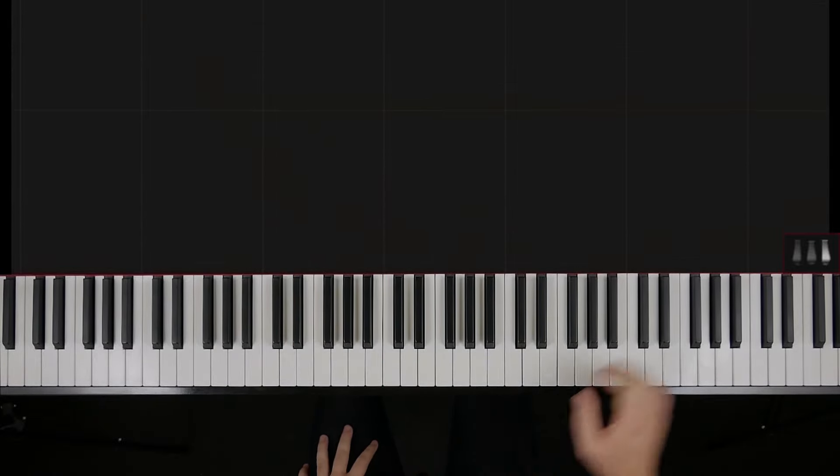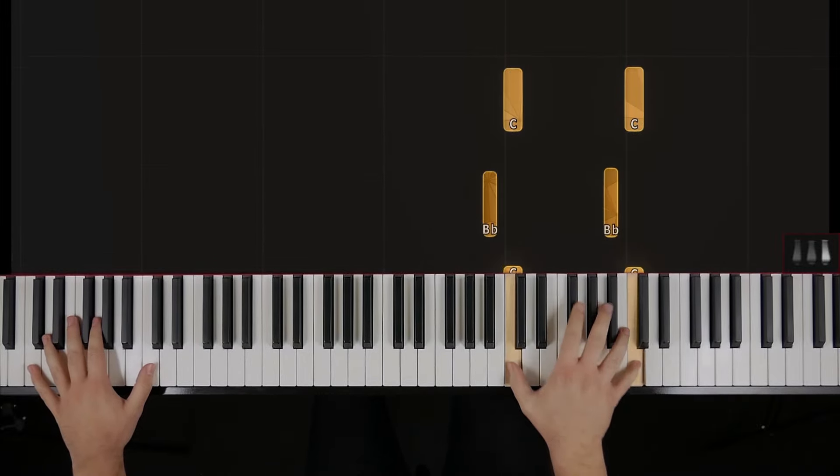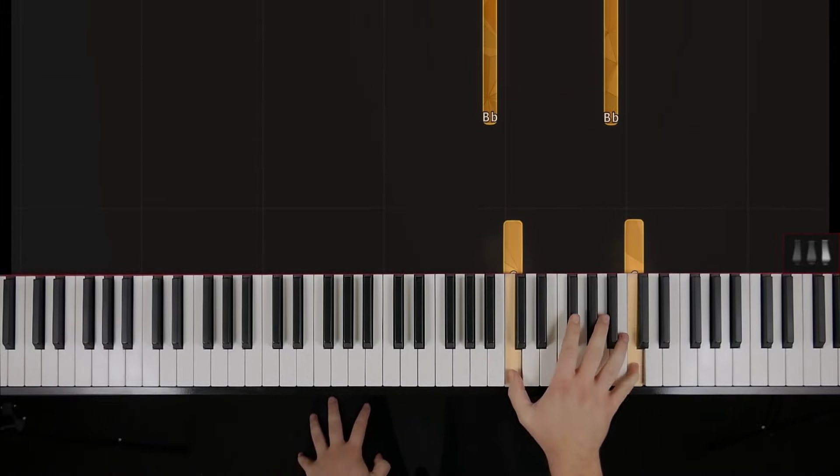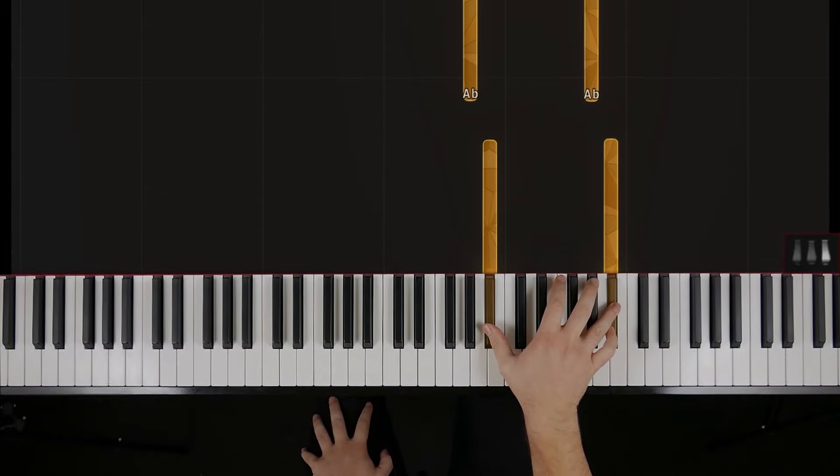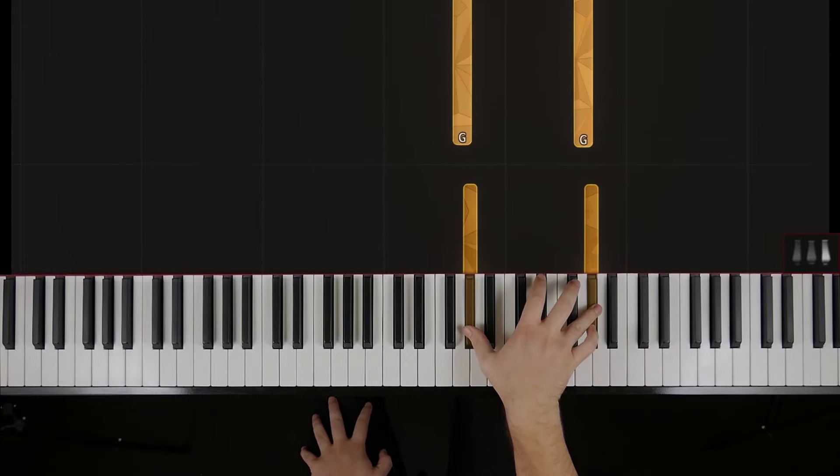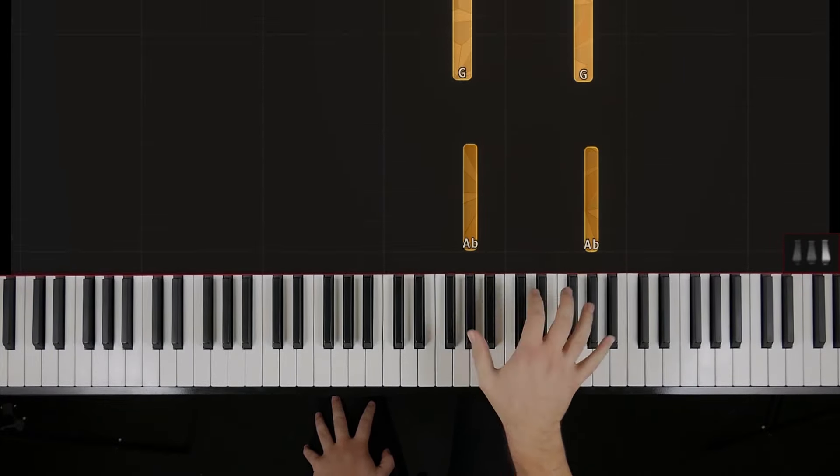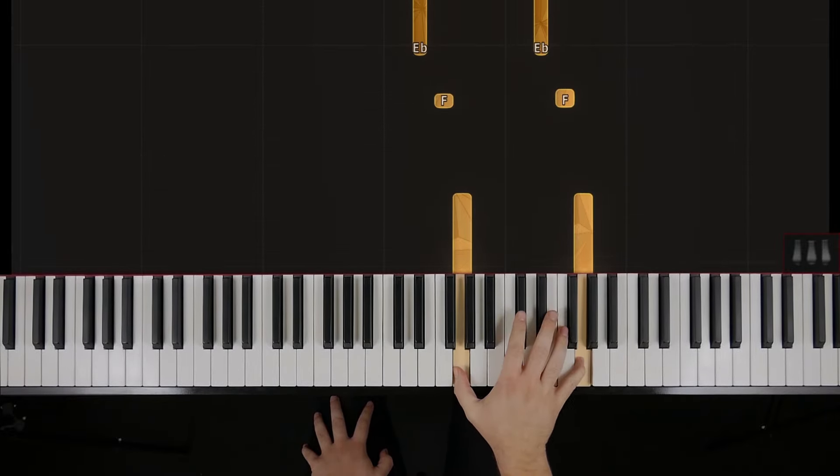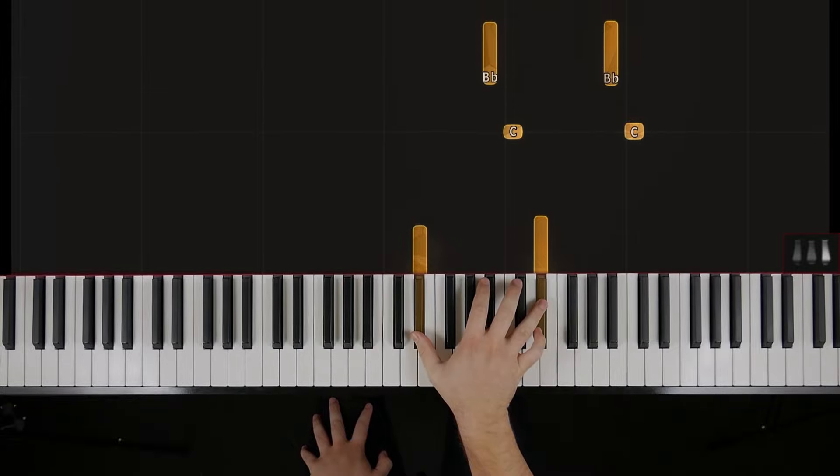The right hand is super straightforward. You kind of already know it intuitively because you've heard it so many times. C octave, B flats—I would use four and one on that, A flats—four and one, G, back up, back down. Simple enough.